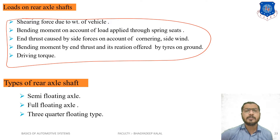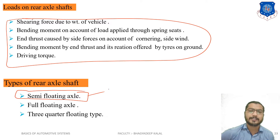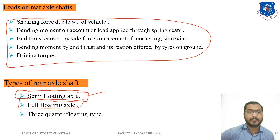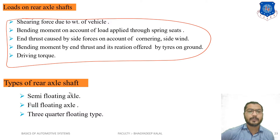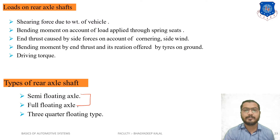The semi-floating type is simple and commonly used in conventional methods — it is used in cars and light duty vehicles. Full-floating is a very robust type with heavy strength, used in trucks and heavy vehicles. Three-quarter floating is in between semi-floating and full-floating axles.